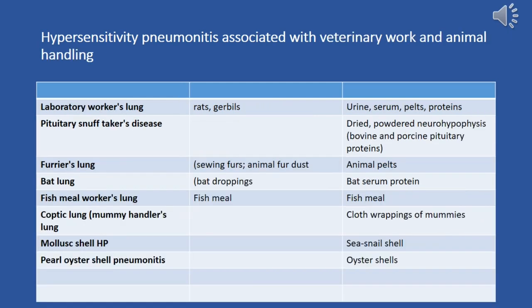Hypersensitivity pneumonitis associated with veterinary work and animal handling includes conditions such as laboratory worker's lung, pituitary snuff taker's lung, furrier's lung, bat lung, fish meal worker's lung, coptic lung, mollusk shell hypersensitivity pneumonitis, and pearl oyster shell pneumonitis.